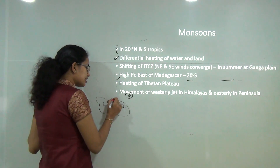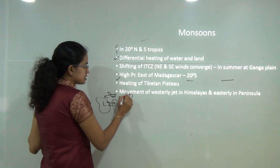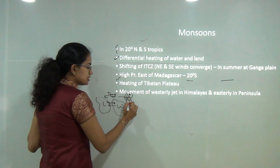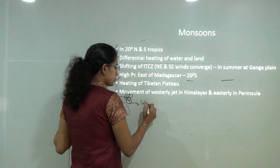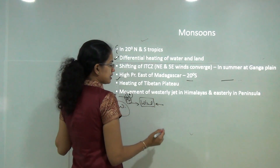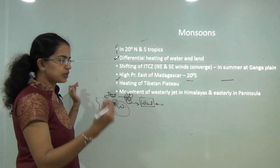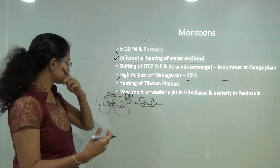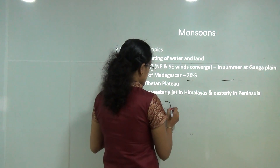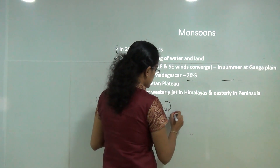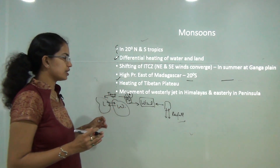When there is a difference in temperature, it creates differences in pressure conditions. Once pressure conditions differ, winds begin to move. If winds flow from the sea, they bring moisture. When they collide with mountains or face a natural obstruction, they drop down once they reach saturation, leading to rainfall. This is the basic process of how rainfall occurs.